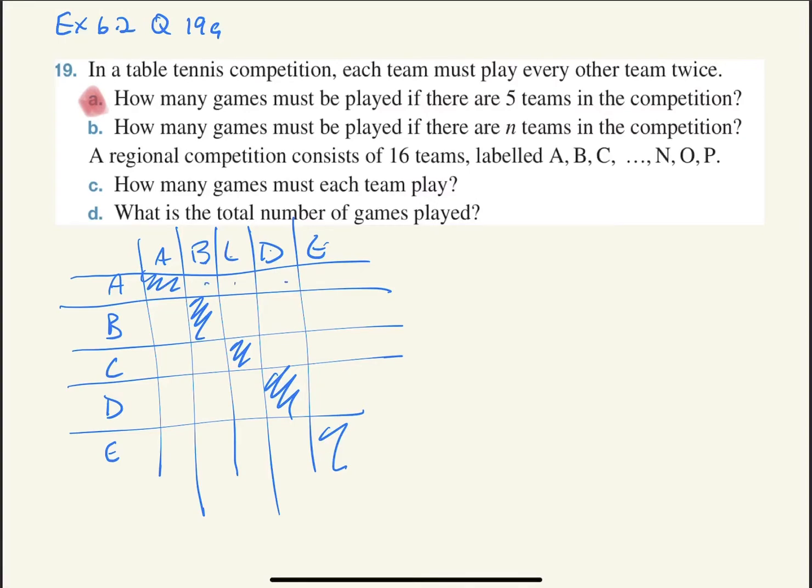So all together, counting them up, we get 1, 2, 3, 4, 5, 6, 7, 8, 9, 10, and another 1, 2, 3, 4, 5, 6, 7, 8, 9, 10. So there will be 20 games all together.